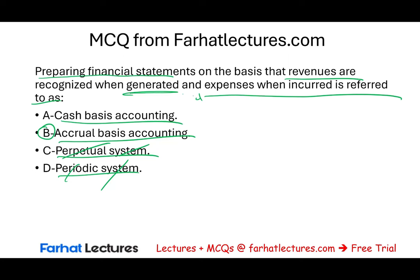Under the accrual basis of accounting, we ask ourselves whether there are revenues and expenses requiring adjustments. Under the cash basis, there is no need for adjustments — we only record when cash is received or paid. Under accrual, we have revenue when we complete the work and an expense when we incur it, regardless of cash flow.